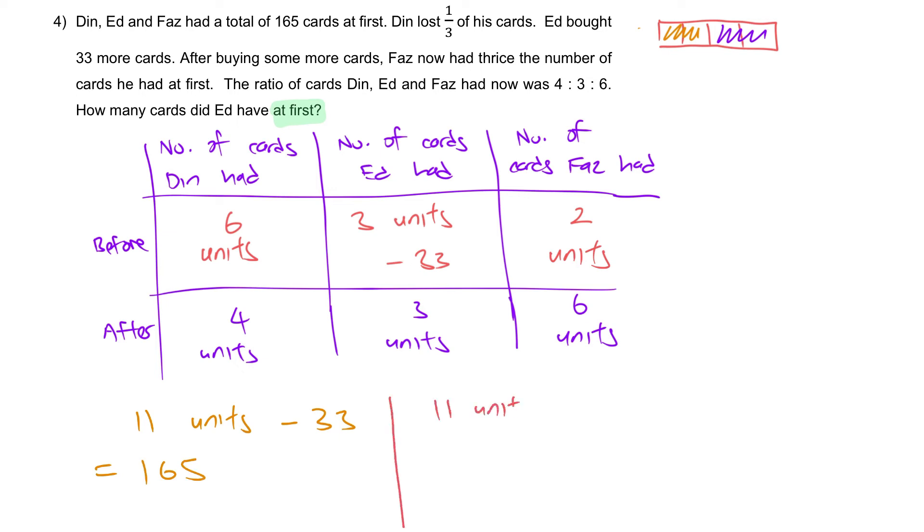11 units will be equal to 165 plus 33 to give you 198. What is 1 unit? Let me partition it. What is 1 unit here? Will be 198 divided by 11. That will give you 18.